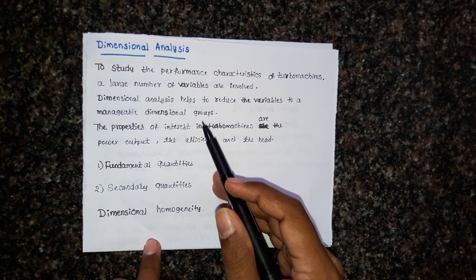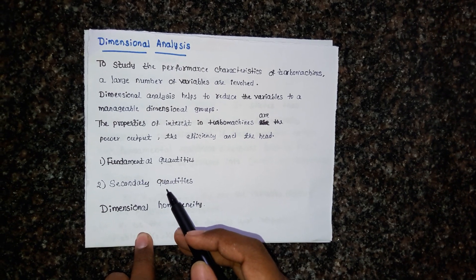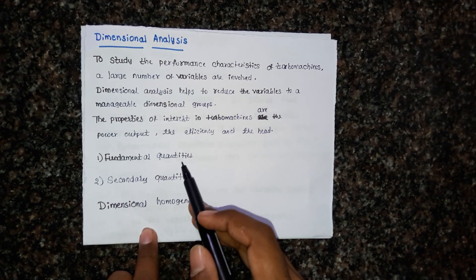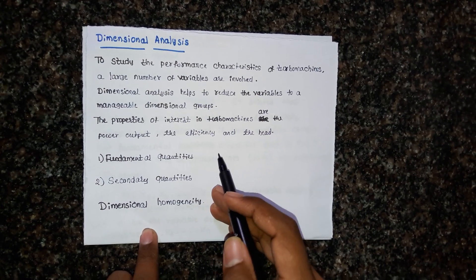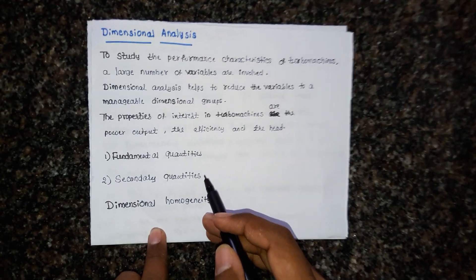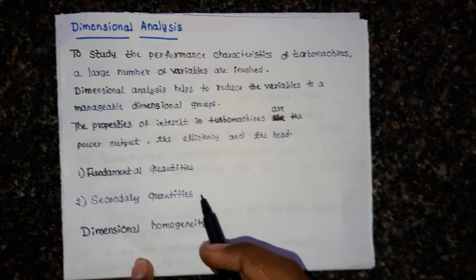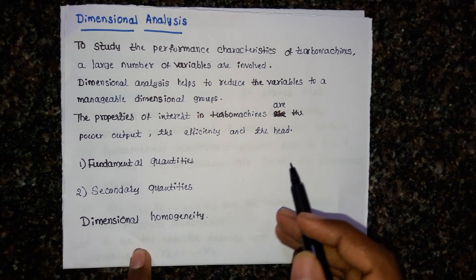Before studying dimensional analysis, let us know about fundamental quantities and secondary quantities. Fundamental quantities are mass, length, and time. Secondary quantities are those derived from fundamental quantities, for example area, surface area, volume, etc.